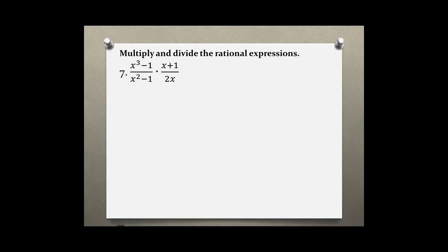We will have to factor each individual part. Starting with x cubed minus 1, that is the difference of two perfect cubes. For that you will need a formula: a cubed minus b cubed equals a minus b, times a squared plus ab plus b squared.